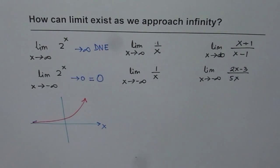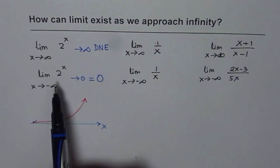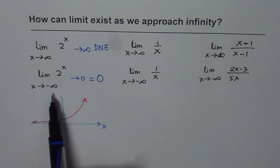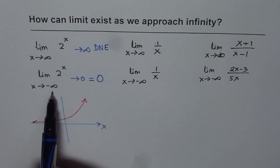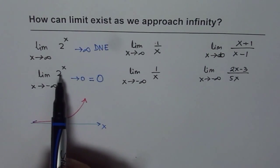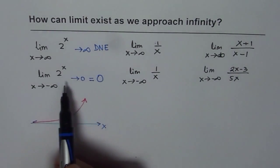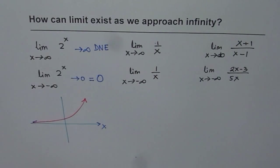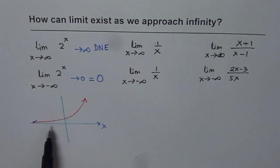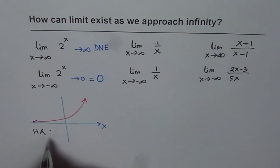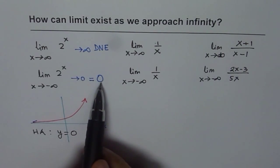Why does this happen? When we talk about the limit of a function, we do not have to be at that point — we are just approaching that value. As x approaches minus infinity, you do not have to be at infinity; you have to be approaching a very large negative value. So if x is a very large negative value, you expect the value of the function to be almost 0. As x approaches minus infinity, the value approaches 0, and we have a horizontal asymptote at y equals 0.